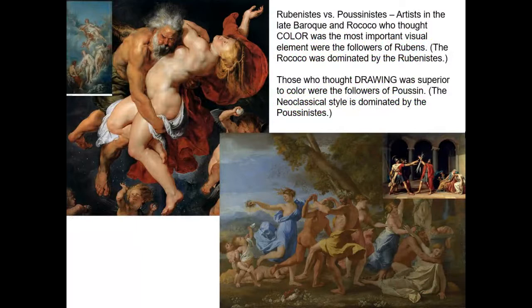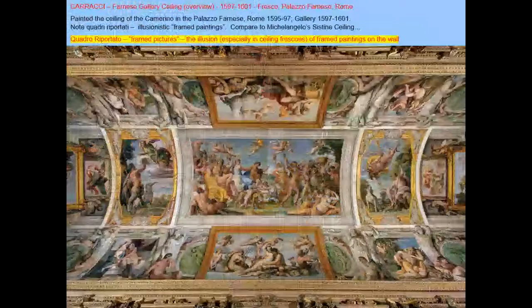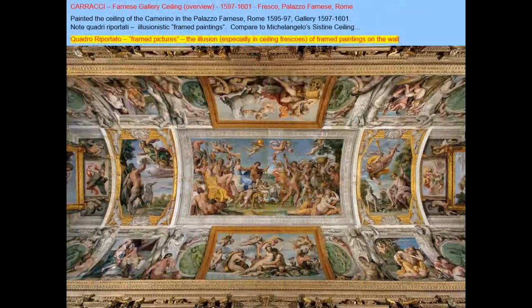We also saw a big division between the followers of two important artists: Peter Paul Rubens, who became known as the master of color — many Rococo painters looked to him as their ideal — and Poussin, whose clarity of form, drawing, and use of allegorical gestures appealed to those who believed drawing was the most important aspect of painting. This very much influenced the Neoclassical style.